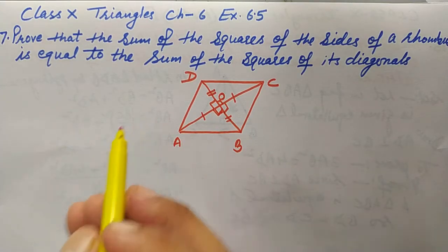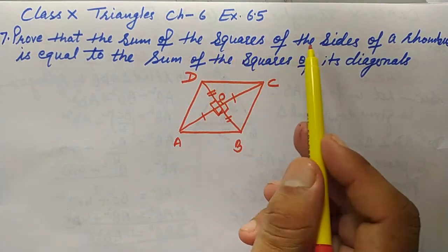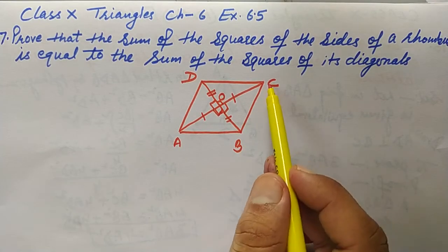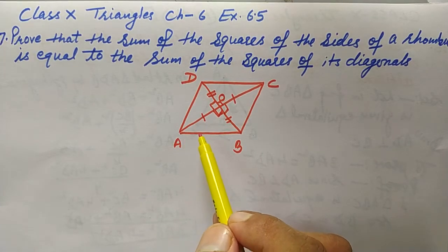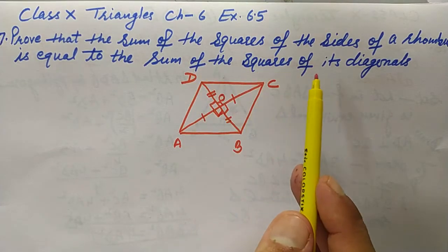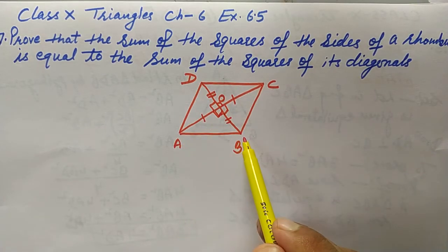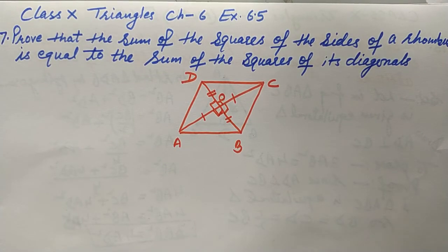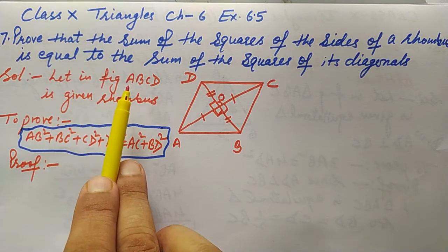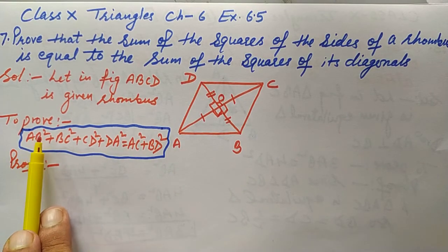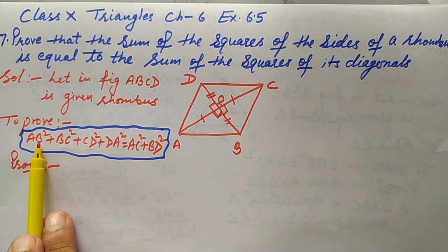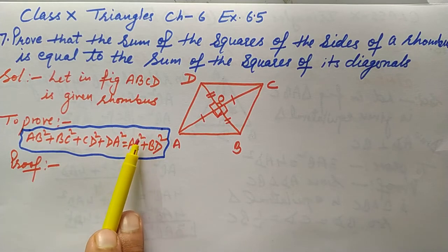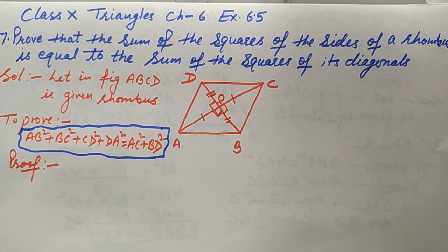In this question, what we need to prove is that the sum of the squares of its sides — that is AB² + BC² + CD² + AD² — is equal to the sum of the squares of its diagonals, which is AC² + BD². Let ABCD be the given rhombus. This is what we have to prove.